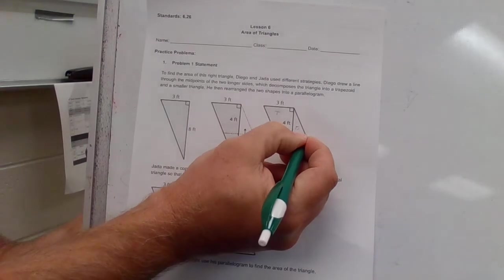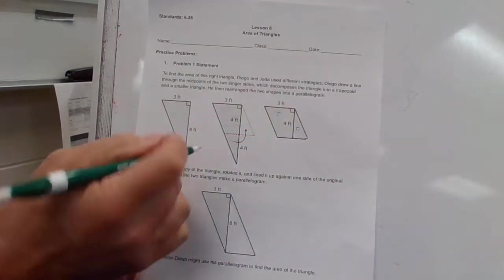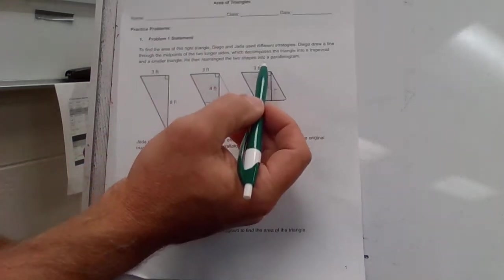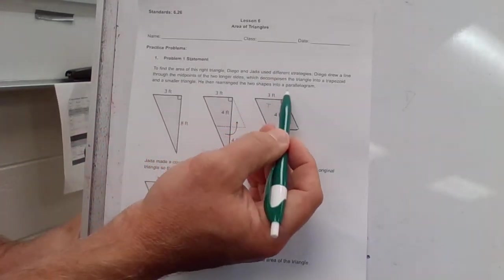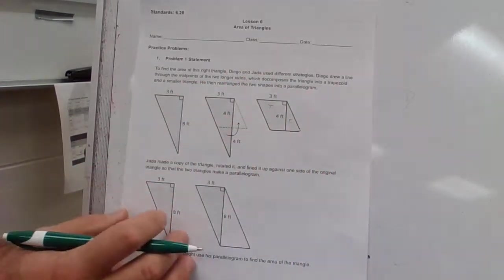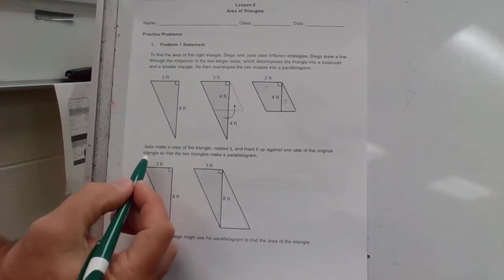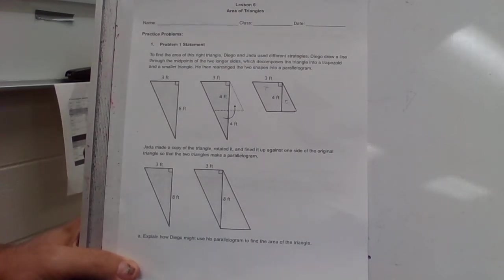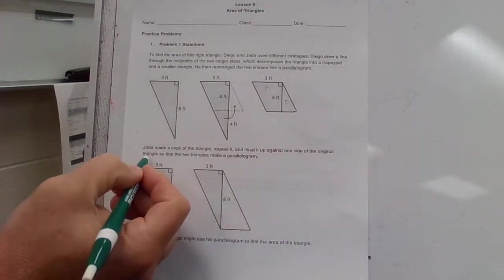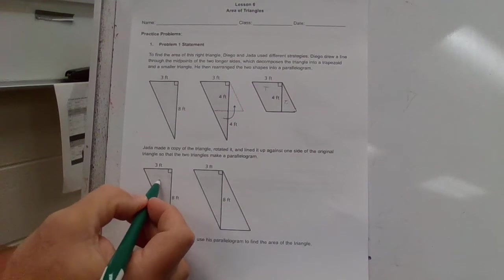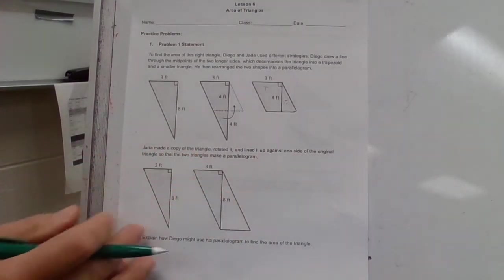Basically, once you take that line away right there, you're going to have a parallelogram. Jada made a copy of this triangle, rotated it, and lined it up against one side of the original triangle so that the two triangles make a parallelogram. All she did is make a copy of this and basically flipped it over right here.